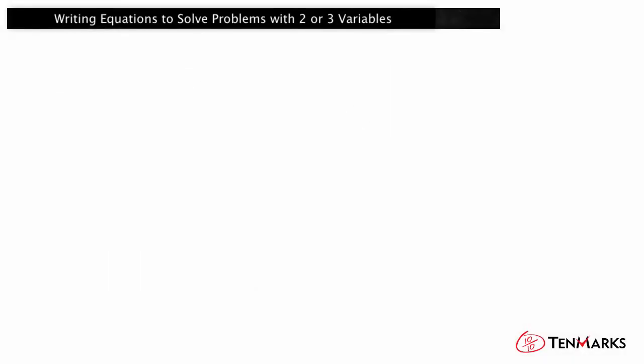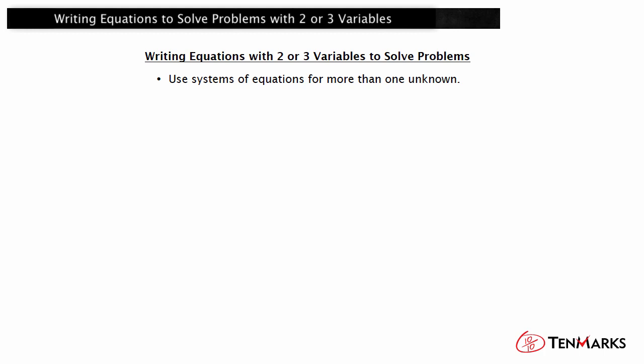In this video, you'll see how to write equations to represent a situation with two or three unknowns, and how to use these equations to solve problems. Sometimes there is more than one unknown in a problem scenario. You can use systems of equations to solve for more than one unknown variable. Once you have written the system of equations, you can solve for the variables by graphing or by using algebraic methods, such as substitution or elimination.